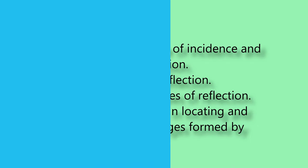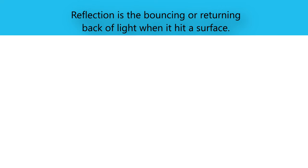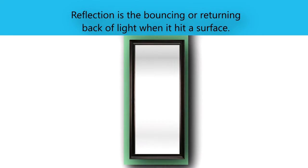Have you noticed how the word ambulance is written on an ambulance car? You will find the answer as we go through this lesson. How does light behave when it strikes a plane mirror or any surface? Reflection is the bouncing or returning back of light when it hits a surface like a mirror.